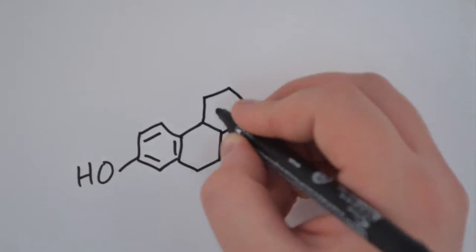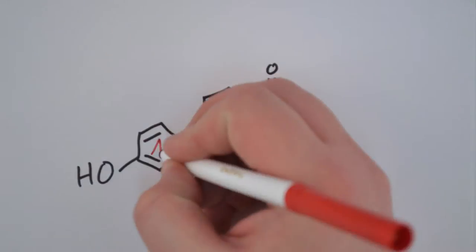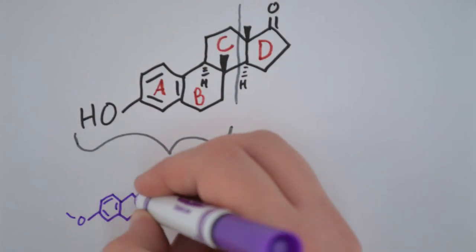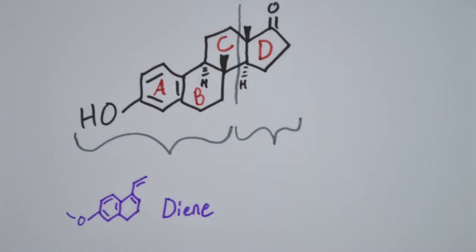So the real target for the Diels-Alder reaction is this. If we were to label the rings A, B, C, D, the C ring could be made from an A, B ring diene and a D ring dienophile. And just like that you've nearly synthesized the natural product simply by taking two far simpler molecules.